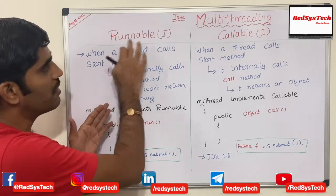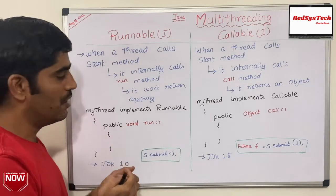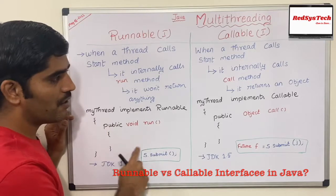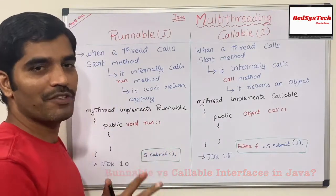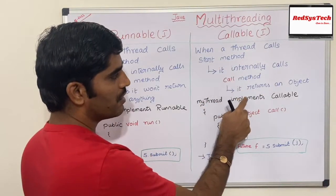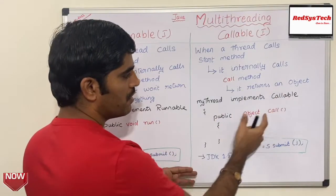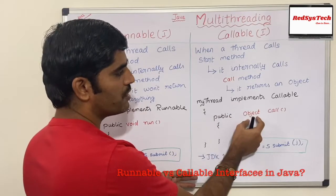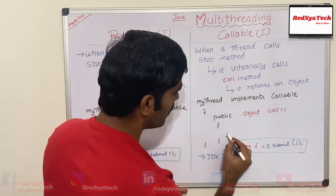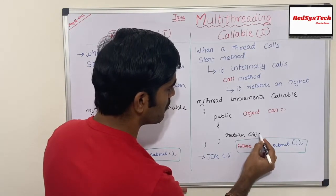If your requirement is that you want to capture the object returned from a job — where the job of a thread is whatever you write inside the run method or the call method — then you use Callable. When a thread calls start, it internally calls the call method, which actually returns an object. So your class implements Callable, and the method signature is: public Object call(). It returns the actual object, like return obj.